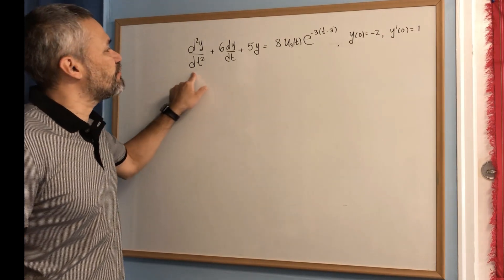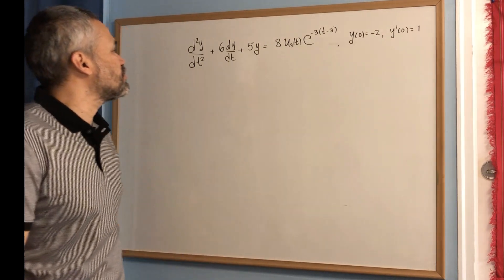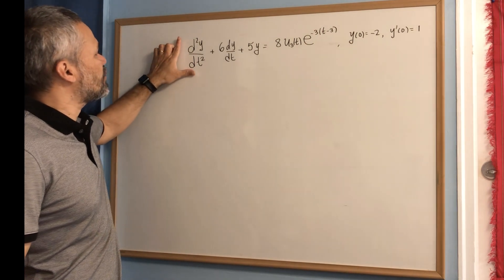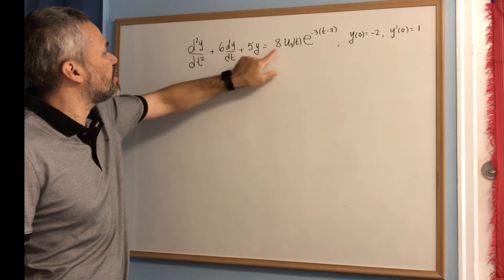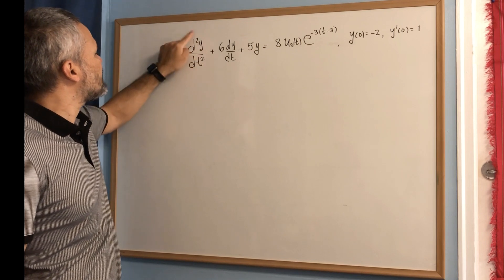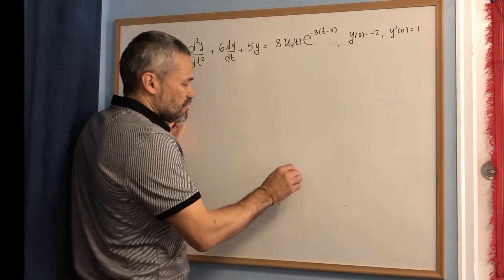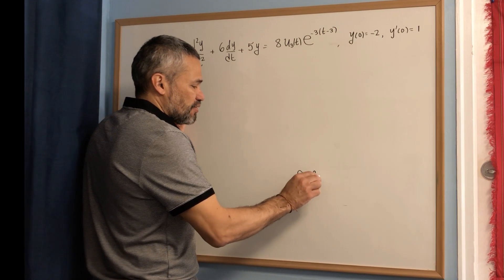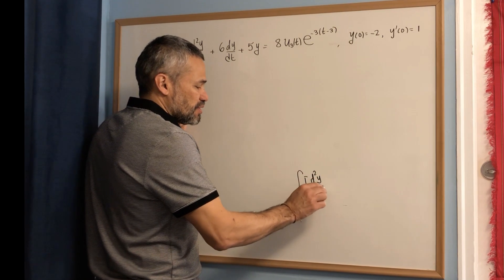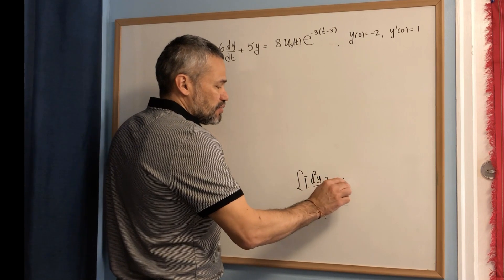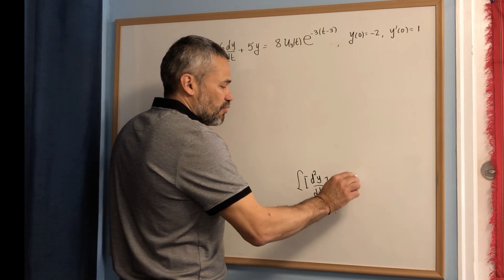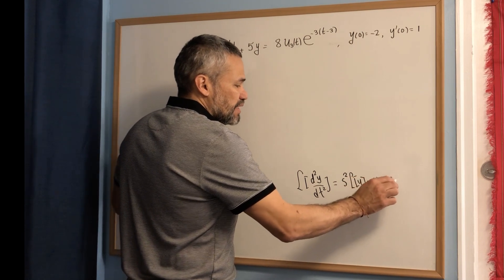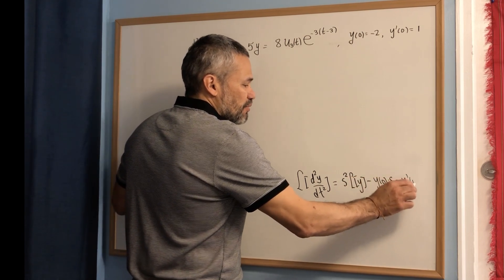In this video we solve this differential equation using Laplace transform. First, we notice that we need to apply the Laplace transform on the left and on the right, but here we have a second derivative, then we need to use this formula: the Laplace transform of the second derivative of y with respect to t is equal to s squared times L{y} minus y(0) times s minus y'(0).